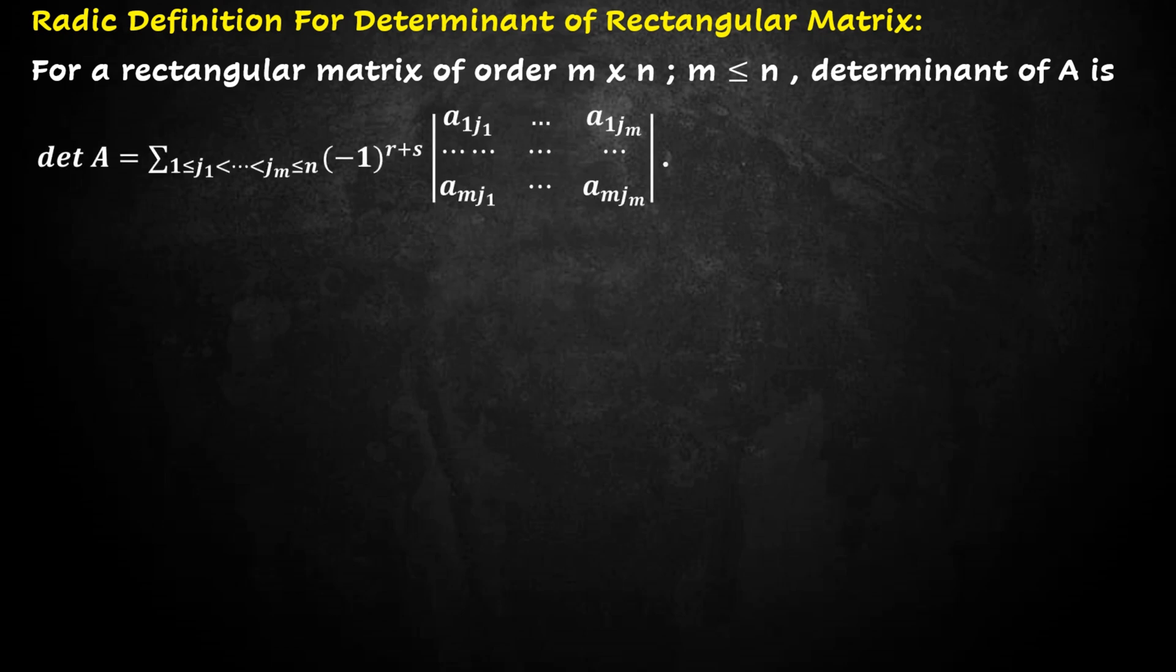determinant of A is equal to summation from 1 to n, summation from 1 to n, minus 1 raised to power r plus s into the determinant of the matrix.